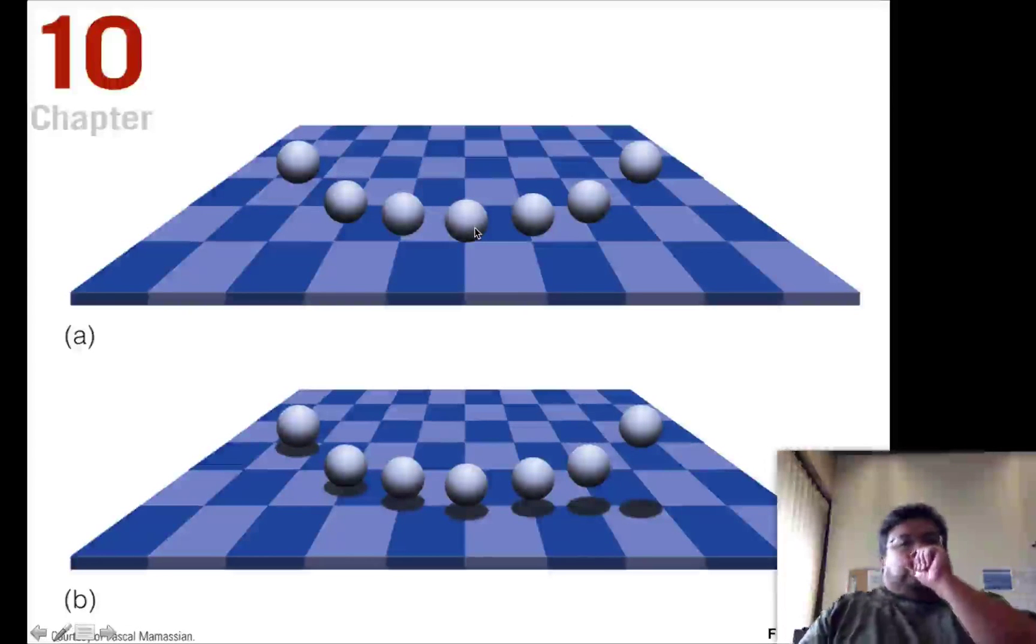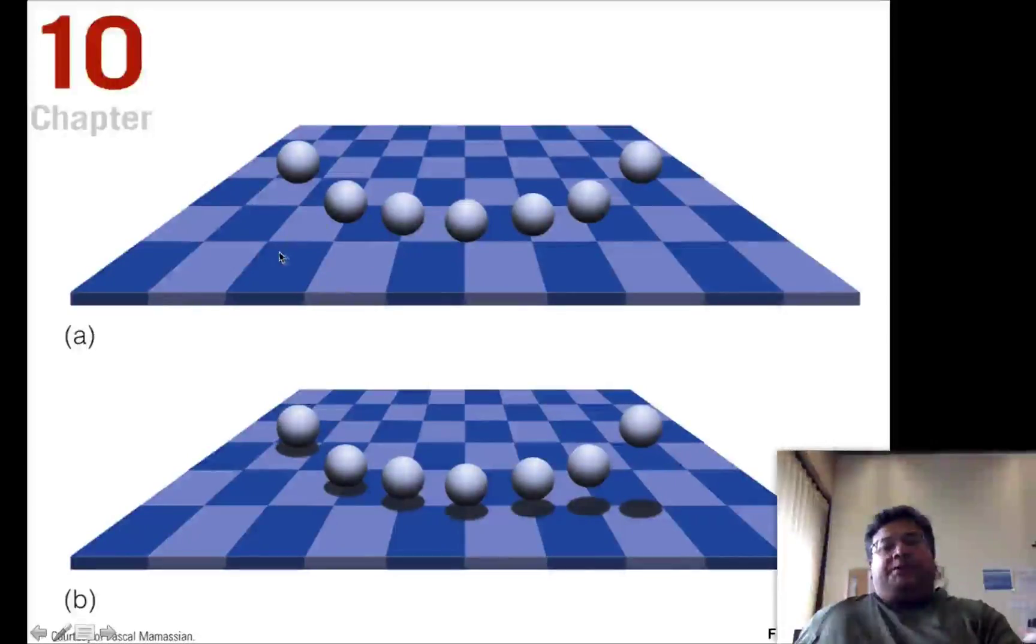If you look at this image here, and if I were to ask you how high above this chess board are these spheres located? Each one. And you're like, well, I really, I don't know. They could be equal distance, they could be equally high, or maybe this one could be higher than the rest. I don't know. I can't tell. But if you put the exact same picture, but then attach shadows to the picture, you get a much better idea.